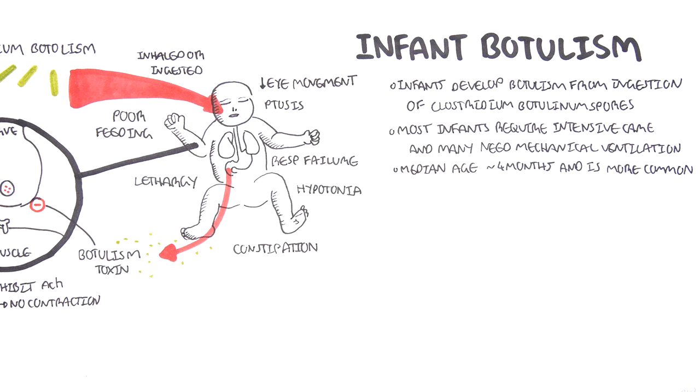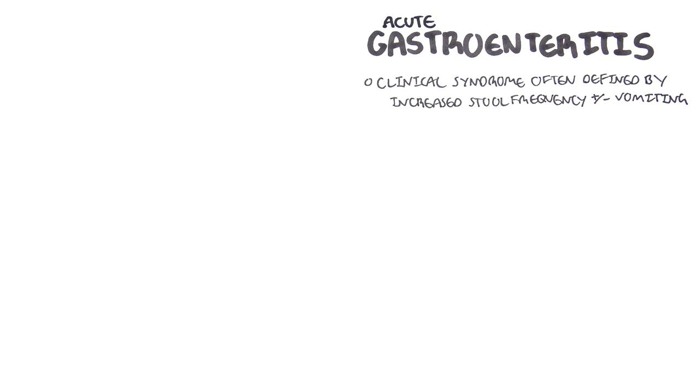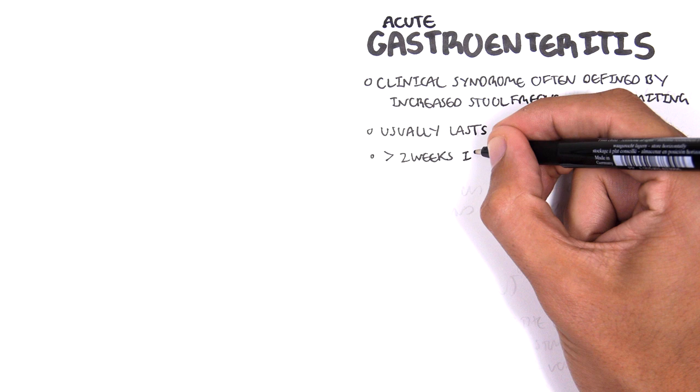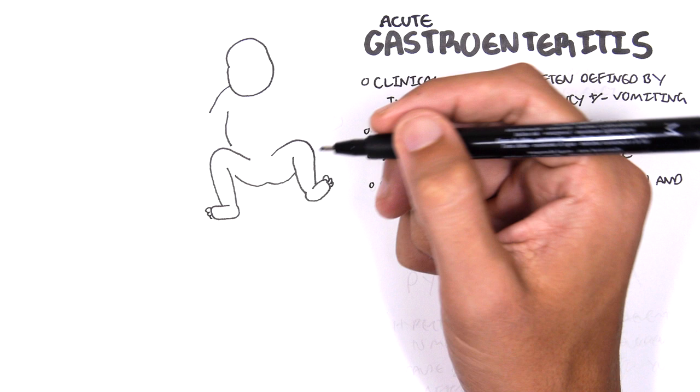Acute gastroenteritis is a clinical syndrome often defined by increased stool frequency with or without vomiting. It usually lasts 1 to 2 weeks but can be more than 2 weeks. If it's more than 2 weeks of diarrhea, it is classified as persistent or chronic. Complications include dehydration and electrolyte imbalance. The signs and symptoms include headache, diarrhea, vomiting and fever, myalgia, and abdominal cramps.